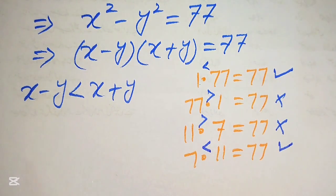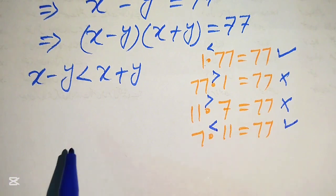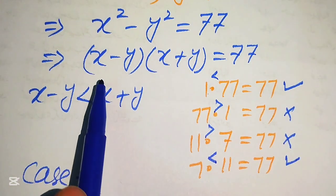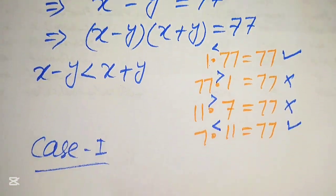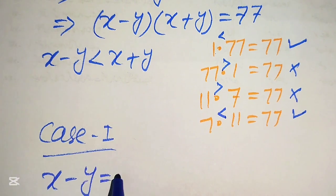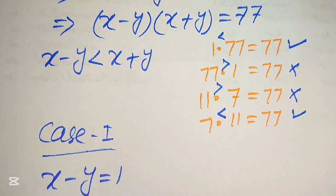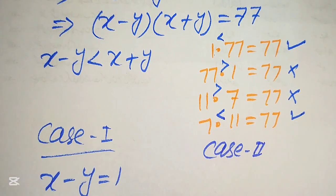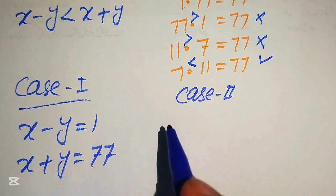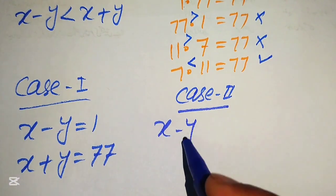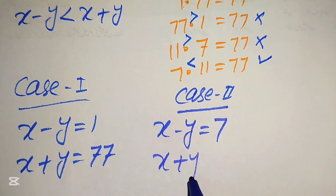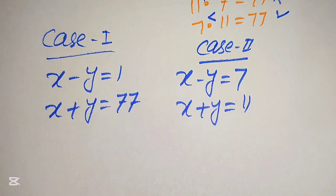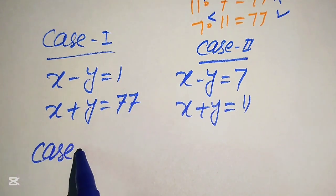We have two valid possibilities, giving us two cases. Case 1: x minus y equals 1 and x plus y equals 77. Case 2: x minus y equals 7 and x plus y equals 11. We now focus on case number 1 first.